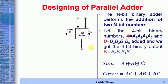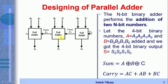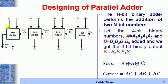In a parallel adder, we have to cascade the full adders as per our requirement. For four-bit binary numbers, we cascade four full adder circuits. The LSB full adder handles a0 and b0. The next handles a1, b1 with carry-in c1, giving output s1 and c2. The third handles a2, b2 with c2, giving s2 and c3. The MSB full adder handles a3, b3 with c3, giving output s3 and carry-out. This cascaded circuit performs parallel addition of two four-bit numbers A and B, producing output s3 s2 s1 s0.